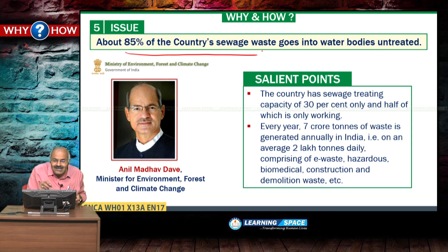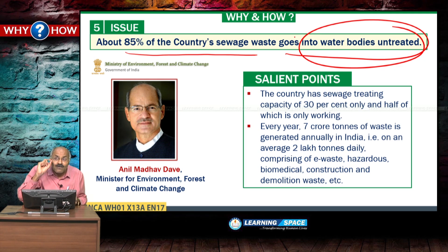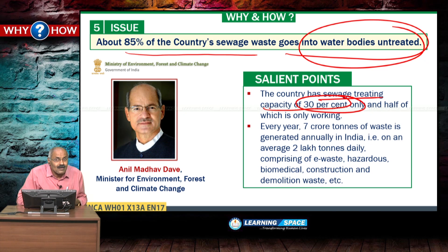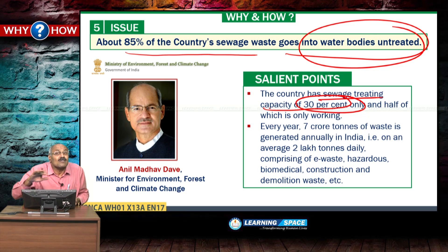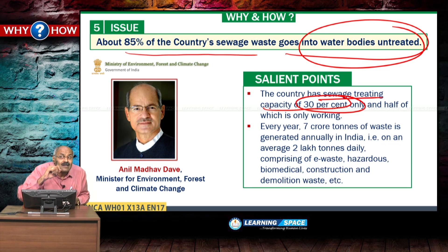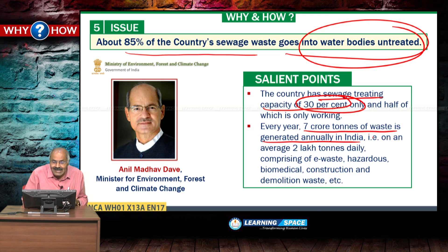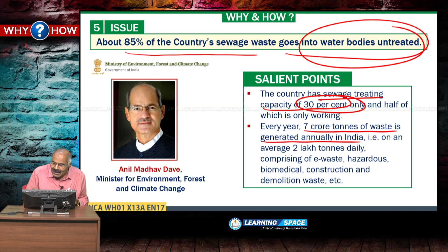About 85% of the country's sewage waste goes into water bodies untreated. The unfortunate aspect is that India has sewage treatment capacity of just 30%, and 50% of that is not working. So overall, 85% of the country's sewage goes untreated, as stated by the Minister for Environment. Every year, 7 crore tons — or 70 million tons — of waste is generated, meaning 2 lakh tons per day, comprising e-waste, hazardous, biomedical, and construction and demolition waste.